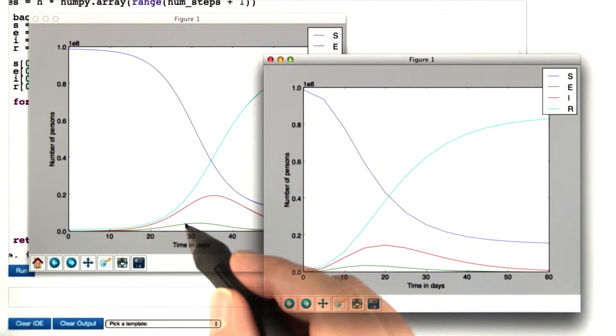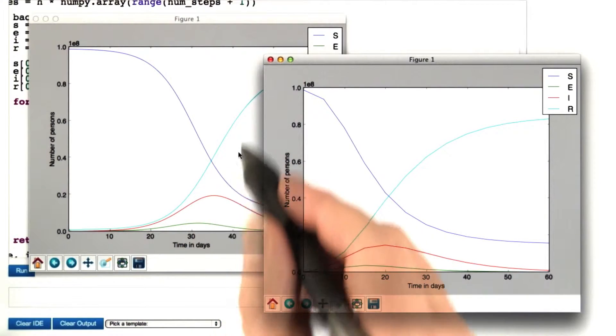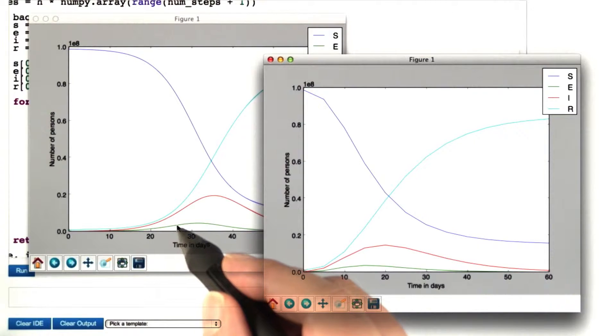Let's start with the output of that software. For reference, this is the result of the forward Euler method with a step size of half a day.